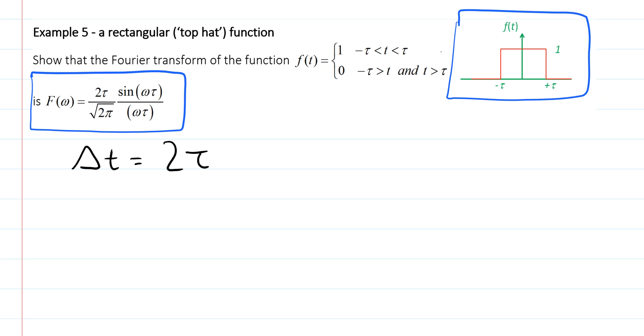The first two zeros occur when the argument of the sinc function is equal to plus or minus pi. So we need to find out when omega tau is equal to plus or minus pi. We can rearrange this to find that omega is equal to plus or minus pi divided by tau.